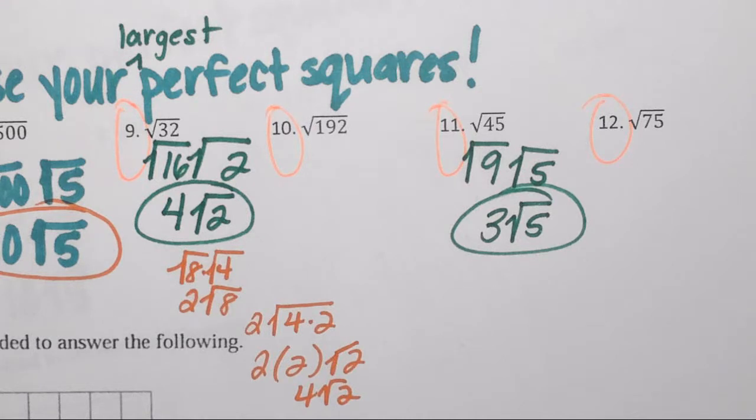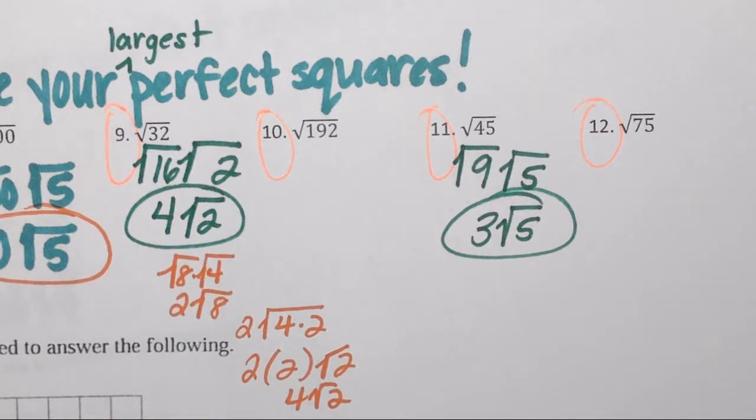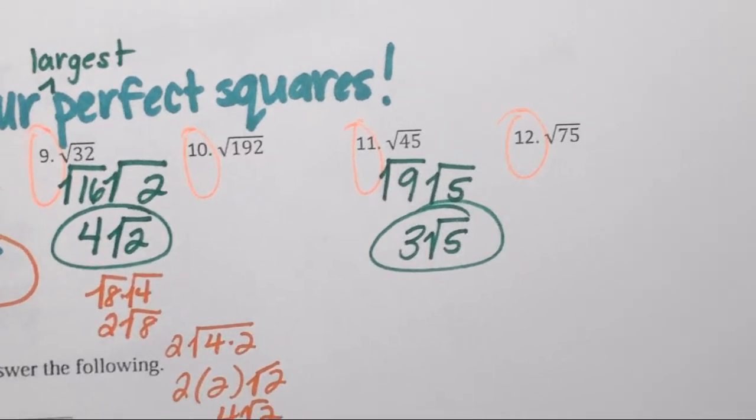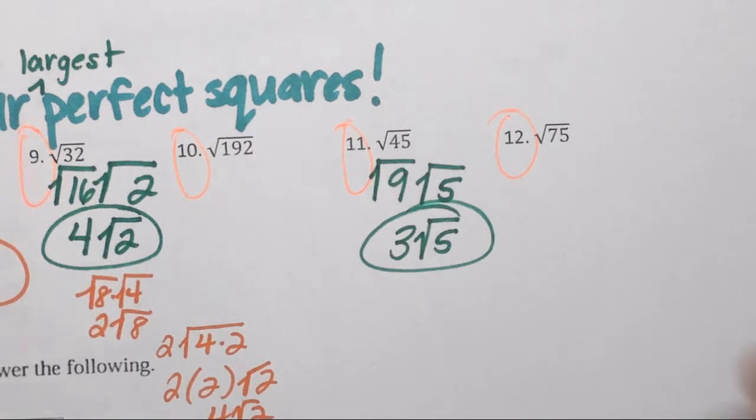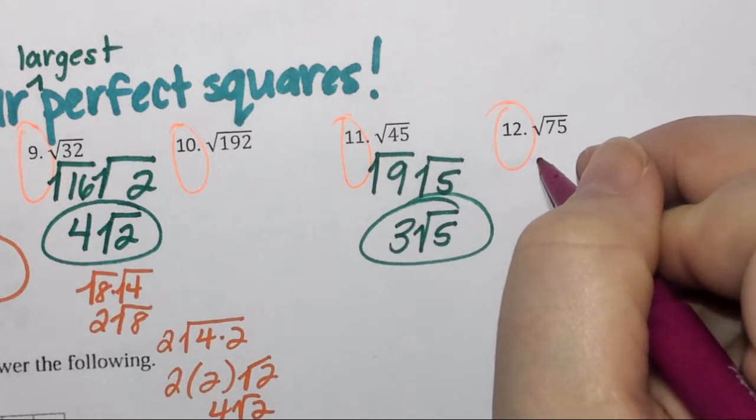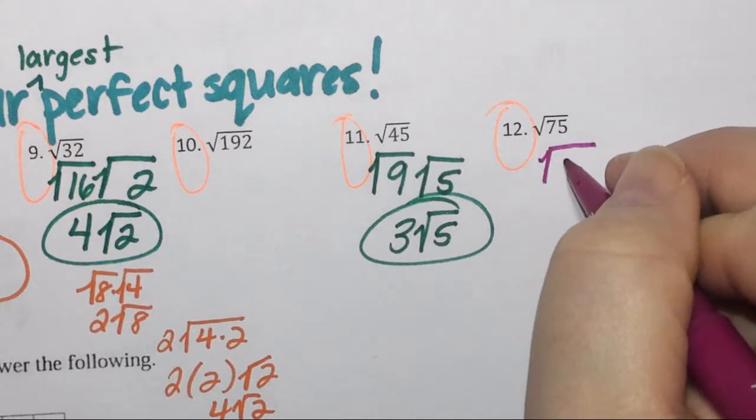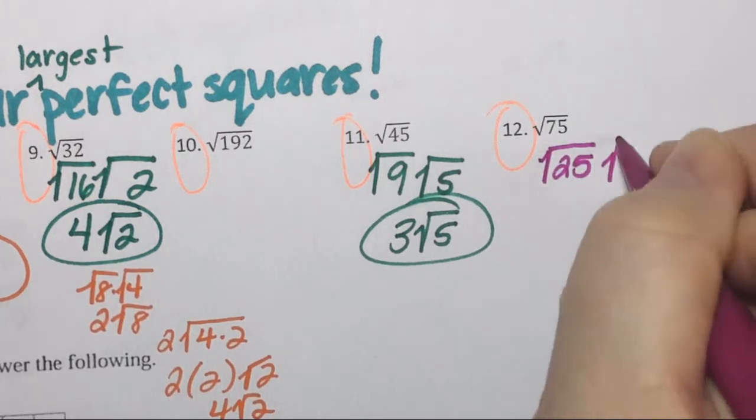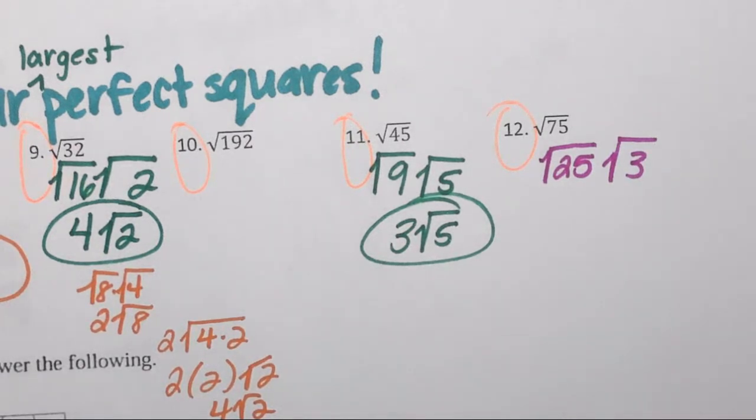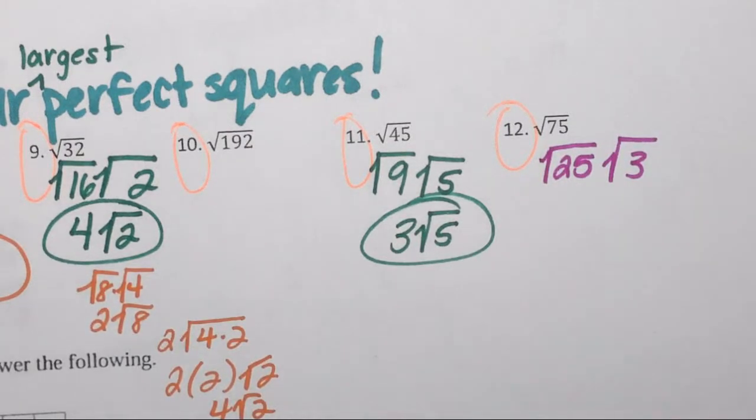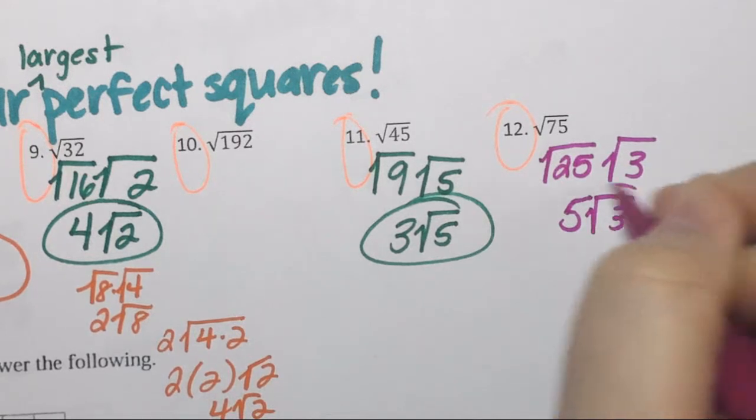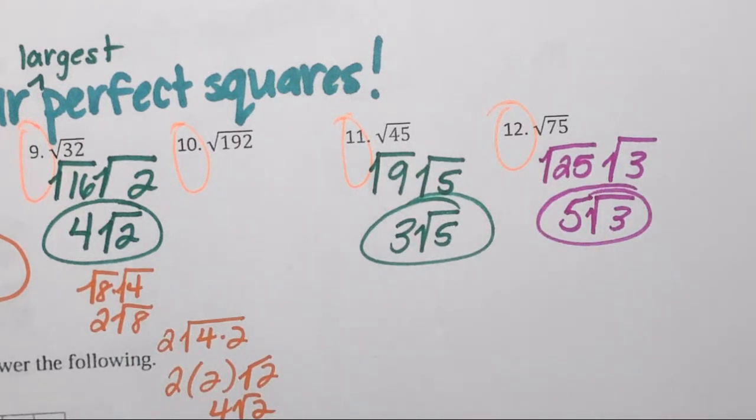Number 12, someone better jump on it because Paige is thinking about these. Anybody from the back want to do number 12? 75's a nice one. Anne-Marie, yes please. 25 and 3. And then what does it reduce to? 5 square root of 3. So we'll give you the point. So 25 and 3, the square root of 25 is 5, so my answer is 5 square root of 3. Anne-Marie is correct and her group can have a point.